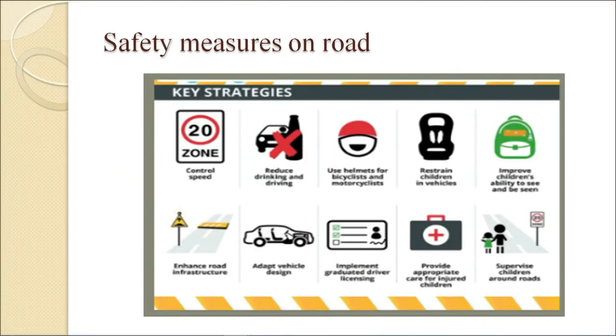Here are some road safety measures shown in the figure: control speed, reduce drinking and driving, use helmets for bicyclists and motorcyclists, restrain children in vehicles, improve children's ability to see and be seen, enhance road infrastructure, adapt vehicle design, implement graduated driver licensing, provide appropriate care for injured children, and supervise children around roads.